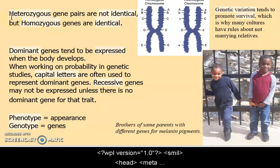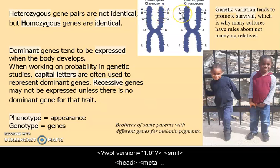Hetero means different, so if the gene pairs are not identical they're heterozygous. Homo means the same. Think of it like this: one chromosome might have genes for eye color, hair color, skin color, shape of your big toe, and the other homologous chromosome has the same features even though there might be some variation there.